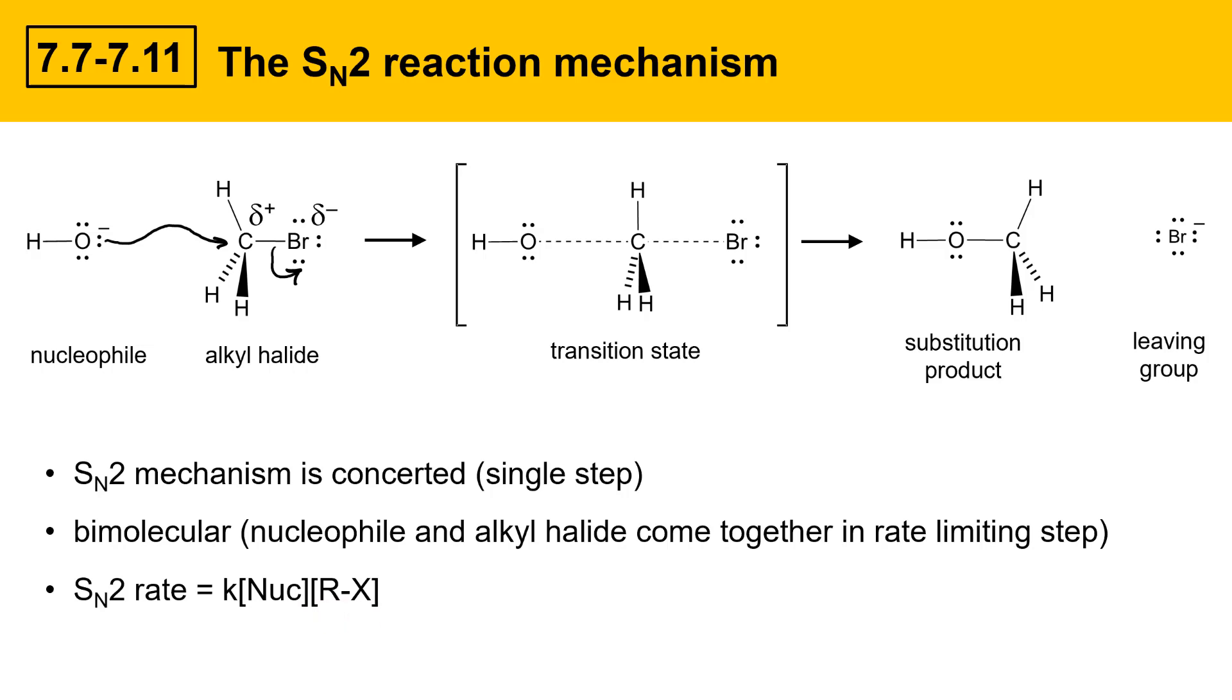In an SN2 reaction, if you double the concentration of nucleophile, you'll double the reaction rate. If you double the concentration of alkyl halide, you'll also double the reaction rate. If you double both the nucleophile and the alkyl halide concentration, you'll quadruple the SN2 rate, and so on.